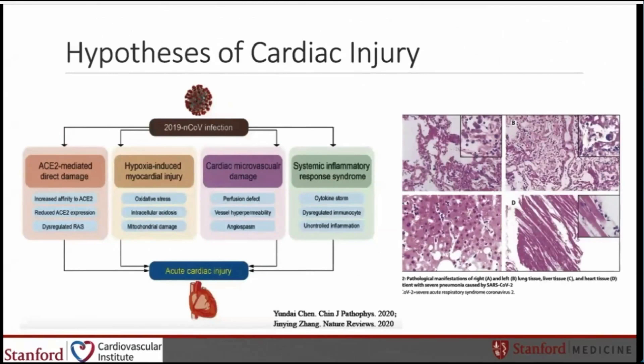Cardiac injury in COVID-19 was likely due to four mechanisms: first, ACE2-mediated direct damage; second, hypoxia-induced myocardial injury; third, cardiac microvascular damage; and fourth, systemic inflammatory response syndrome. Histological findings were consistent with these potential underlying mechanisms that led to cardiac injury.